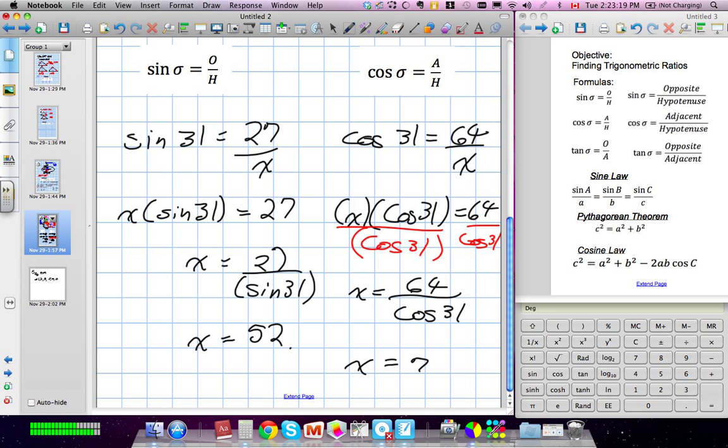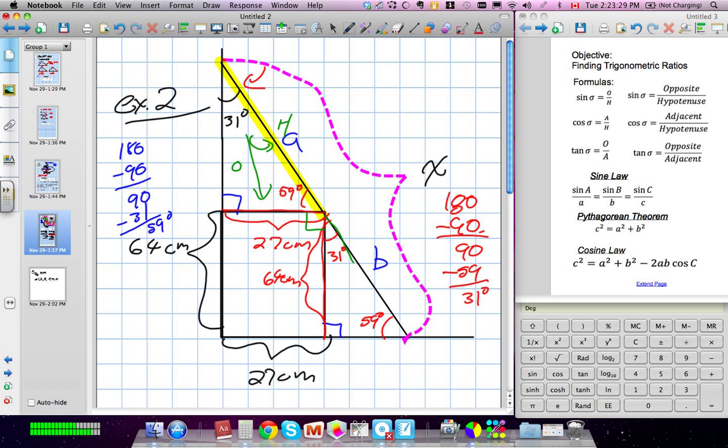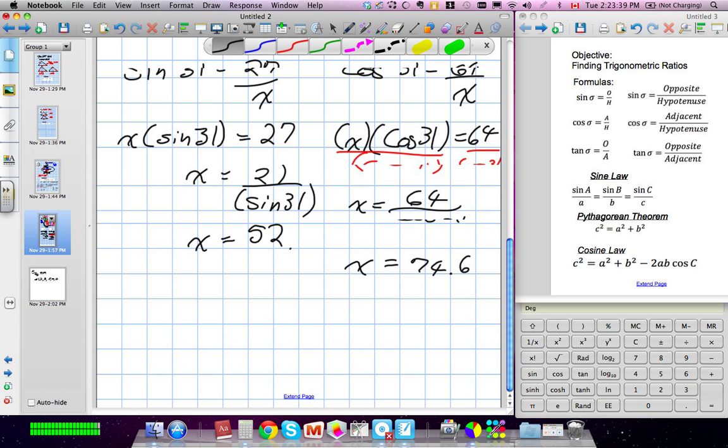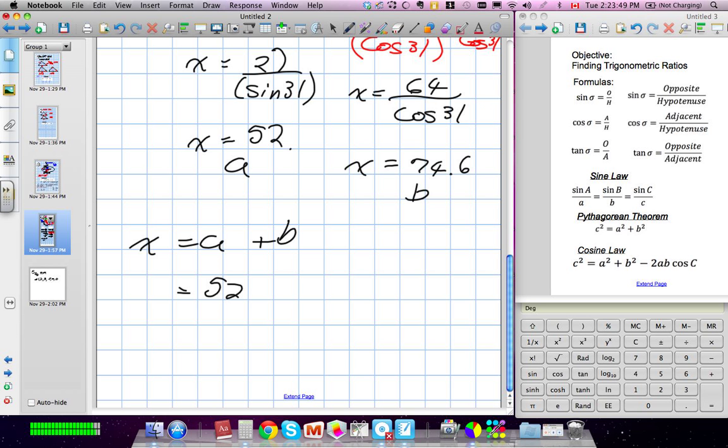Now the last thing we need to do in this question: because we now found this part of the triangle, we need to add the two together to find our X. So X equals A plus B. The entire ladder equals A plus B. We're going to plug in our two values: 52 and we'll round the other one to 75. We end up with 127 centimeters is the length of this ladder.